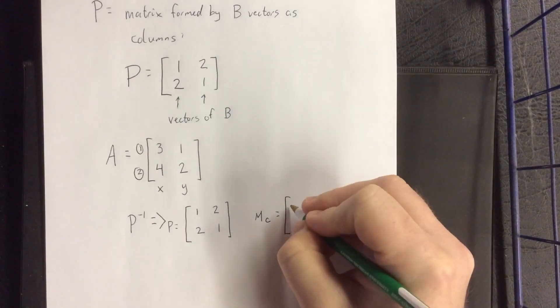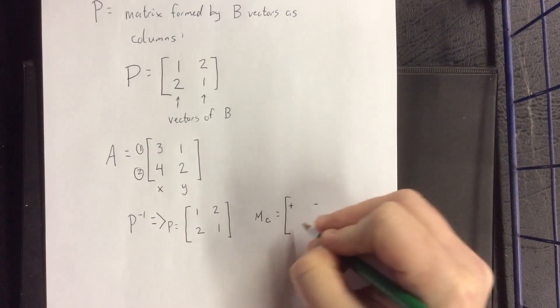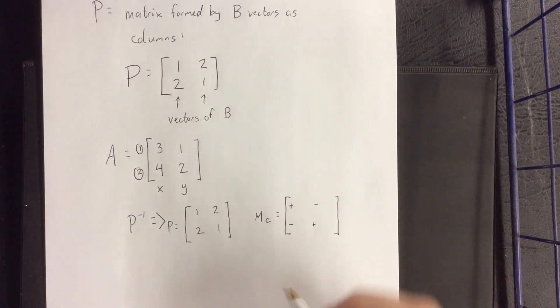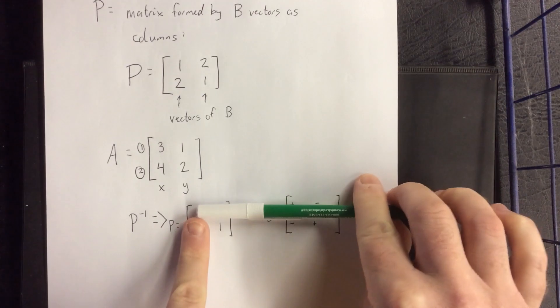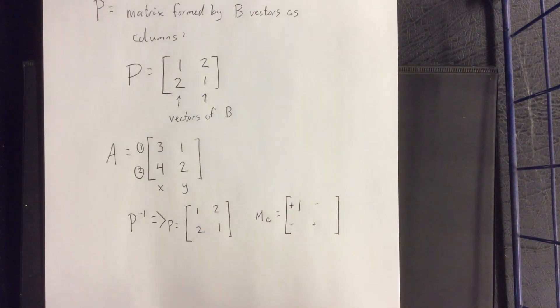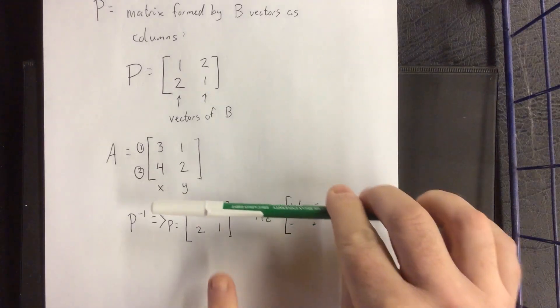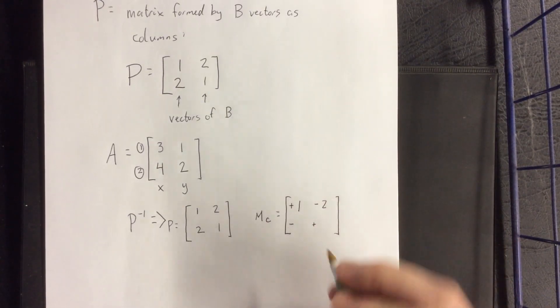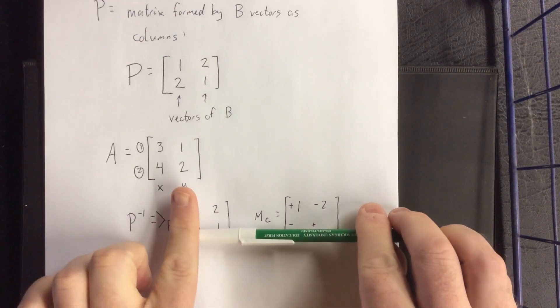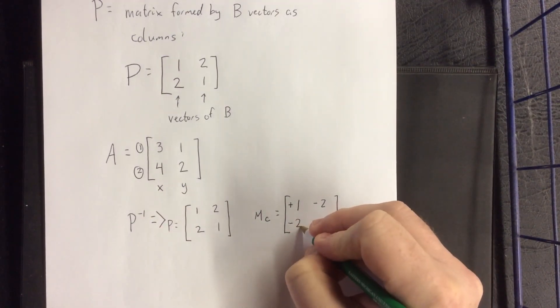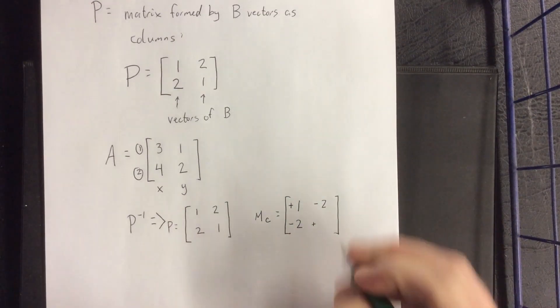For the cofactors we'll start with a little cofactor grid: plus, minus, minus, plus. For the 1,1 cofactor, cover up the first row first column, we get 1. For the 1,2 cofactor, we cover up the first row second column, we get a 2. Similarly the 2,1 entry, cover up the first column second row, we get a 2, and the 2,2 we get a 1.